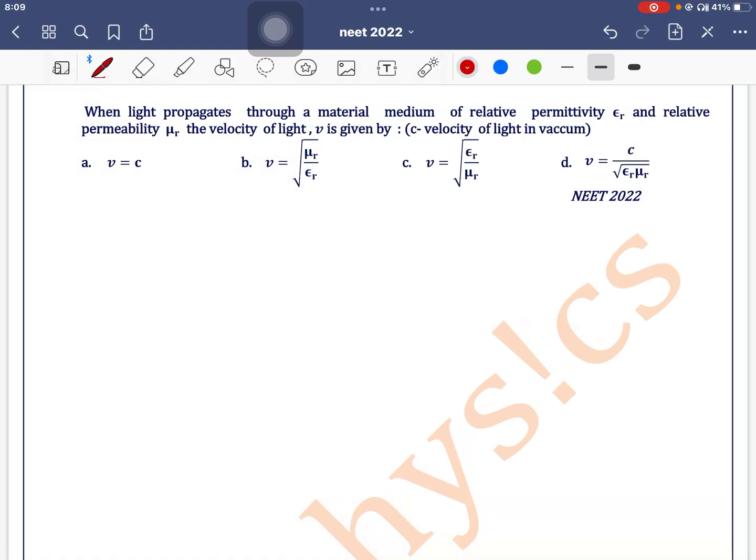When light propagates through a material medium of relative permeability epsilon r and relative permeability mu r, the velocity of light is given as 1 by under root of mu into epsilon.